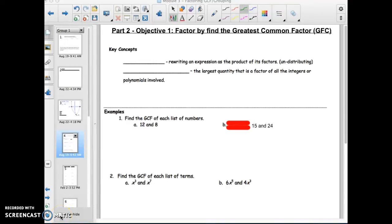Alright, Module 3, Part 2 has one objective, and it's going to be to factor by finding the greatest common factor, or what I'm going to reference as the GCF for short. You'll hear me say that a lot.